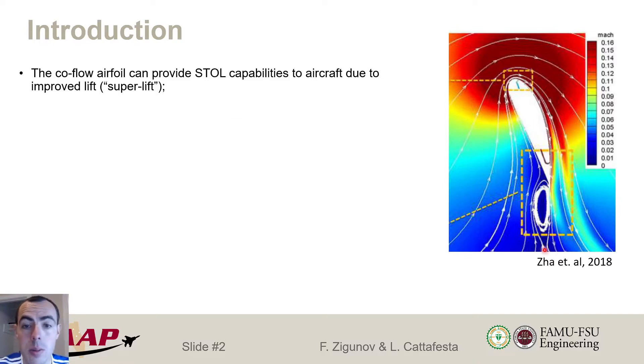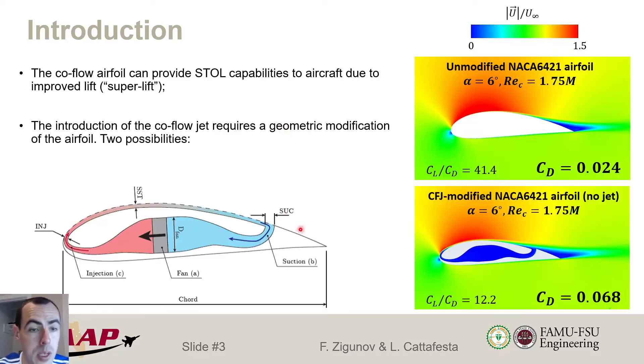This co-flow jet concept was proposed by Professor Gisheng Zha to provide short takeoff capabilities due to superlift coefficients in airfoils by blowing tangentially at the suction peak of an airfoil. So this is how this geometry looks like for a general co-flow jet airfoil. We have a fan or a compressor embedded into the airfoil sucking air out of the suction surface of the airfoil and then bringing it back as a jet into this slot here located at the suction peak of the airfoil.